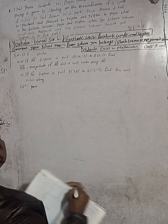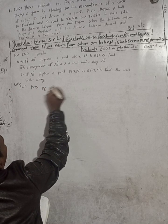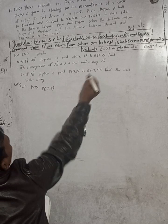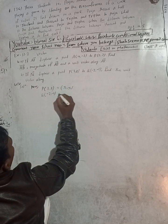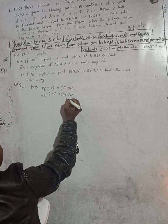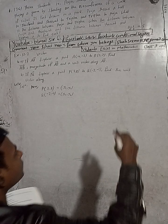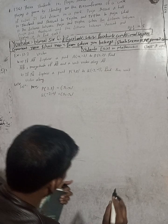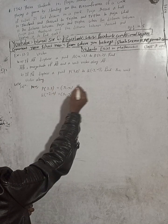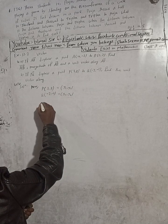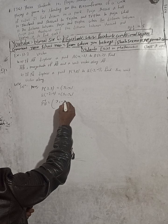Now moving to part B — the solution for 4b. Here P is at (7, 8) and Q is at (-2, -1). So x1, y1 is (7, 8) and x2, y2 is (-2, -1). The PQ vector is equal to the formula: x2 minus x1 by y2 minus y1.